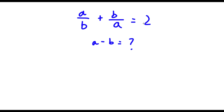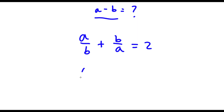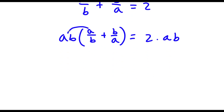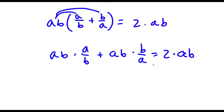Alright, so I have a over b plus b over a is equal to 2, and I want to find the value of a minus b. So first of all, I'm going to multiply both sides by ab. So now I have a over b plus b over a, times ab, is equal to 2 times ab. Now if I distribute the ab, I get ab times a over b, plus ab times b over a, is equal to 2ab. Now for the first term, the b's cancel out, and a times a is a squared.